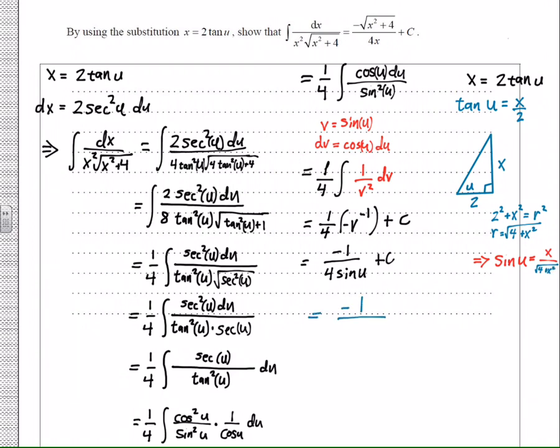So the sine of u is going to be x over the square root of 4 plus x squared. So instead of negative 1 over 4 sine of u, it's negative 1 over 4 times x over the square root of 4 plus x squared plus c. I'm going to multiply top and bottom by the square root of 4 plus x squared so we get something a little bit cleaner. And as you can see, it turns out to be the very thing that the authors asked you to find.